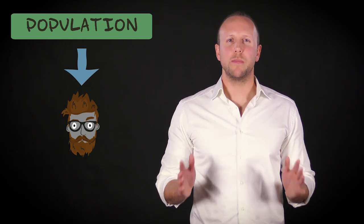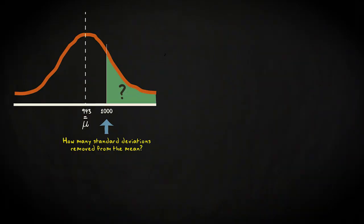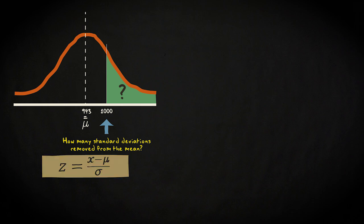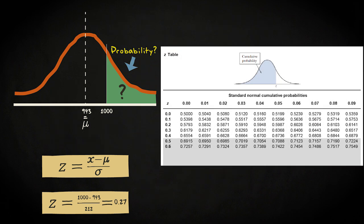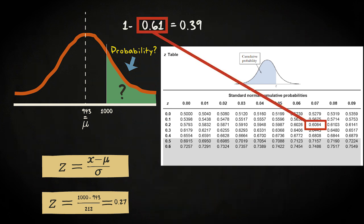Imagine you select a random hipster from the population. What is the probability that this hipster has a reading time of 1000 minutes or more? First, we compute how many standard deviations a person with a reading time of 1000 is removed from the mean — that is, their z-score in the population. The z-score is 1000 minus 943 divided by 212, which equals 0.27. We are interested in the area to the right of this value. Looking it up in our z-table, the chance of selecting a person with a reading time of 1000 minutes or more is 39%.